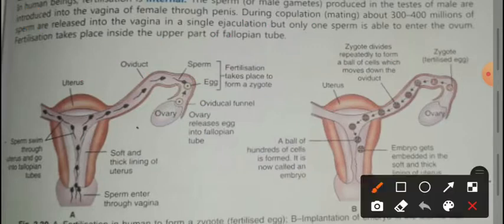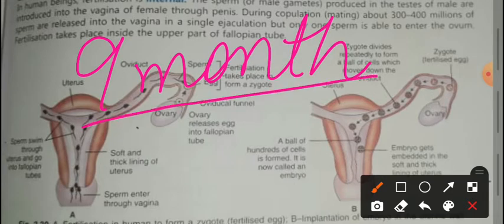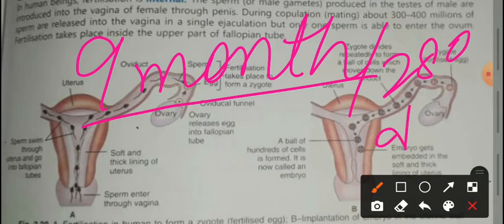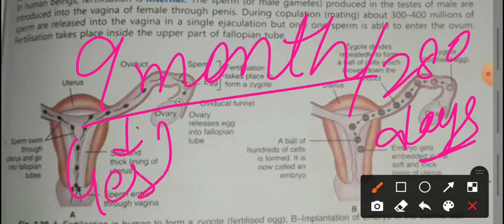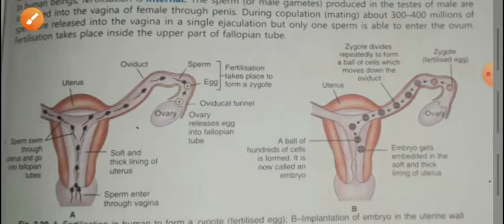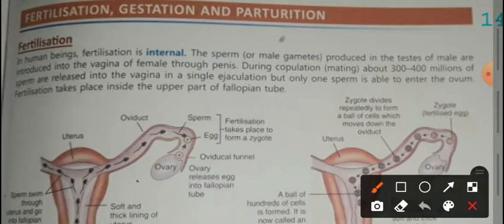After the egg is fertilized, it will be held for 9 months inside the uterus. This 9-month period is called the gestation period. At the end of 9 months, the entire child is developed.